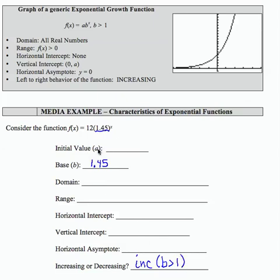My initial value, that is the output that corresponds to an input of 0. Well, when input is 0 here, anything to the 0 power is 1, and I just get this number here, which is the a value that's part of my function. So that would be 12.